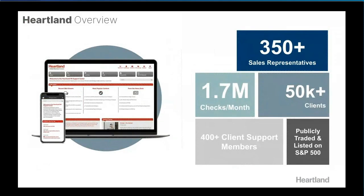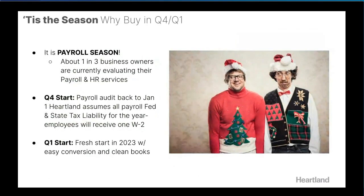Here's another quick overview of Heartland: we have over 350 sales representatives in the payroll space. We issue about 1.7 million checks per month. We have over 50,000 clients currently across all 50 states. We have over 400 client and support members — that covers everything from implementation to your day-to-day payroll processor. And we are publicly traded, which a lot of people appreciate.